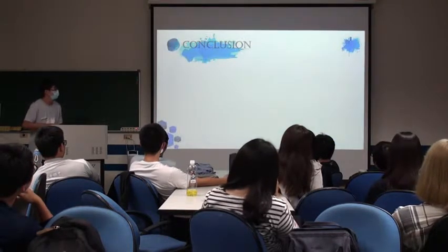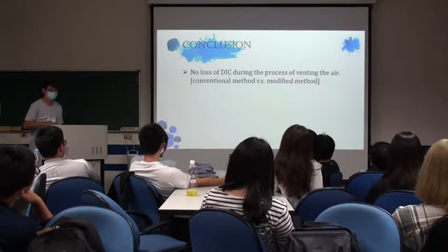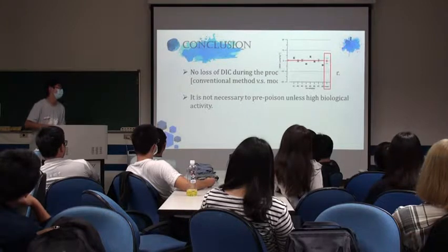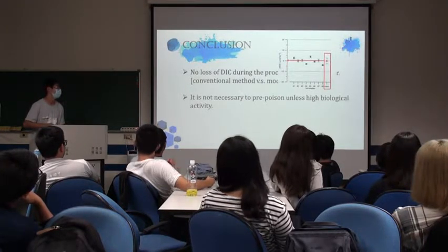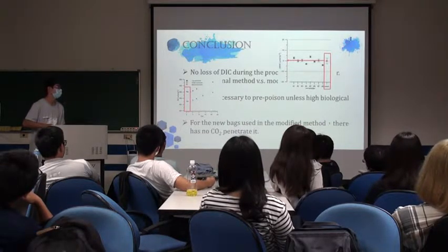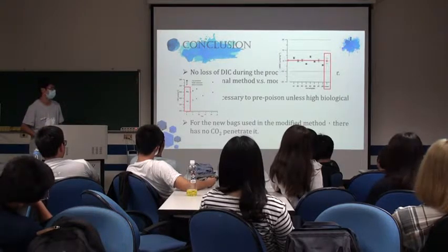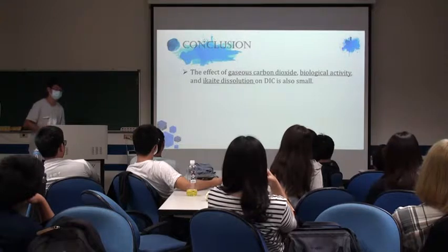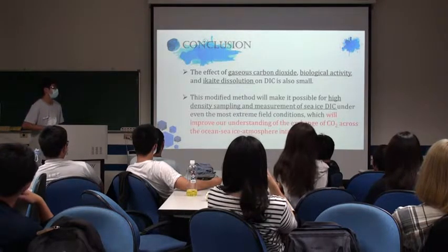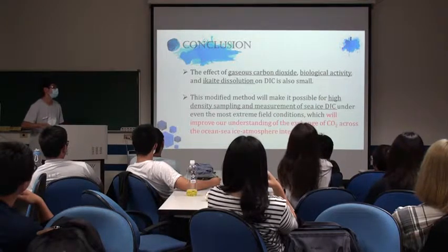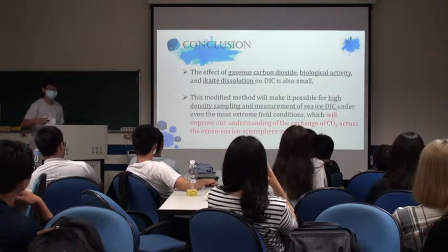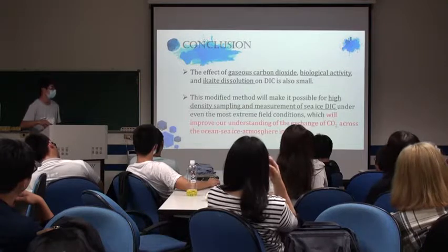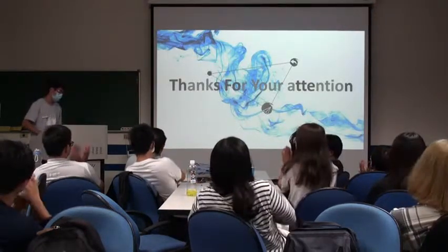Conclusion. There is no loss of DIC during the process of venting the air, whether using the conventional or modified method. Pre-poisoning is not necessary unless there is high biological activity. For the new bag used in the modified method, there is no CO2 permeation. The effects of gaseous CO2, biological activity, and ikaite dissolution on DIC are small. This modified method will make possible high-density sampling and measurement of sea ice DIC, even under the most extreme field conditions, improving our understanding of CO2 exchange across the ocean, sea ice, and atmosphere interface. Thank you for your attention.